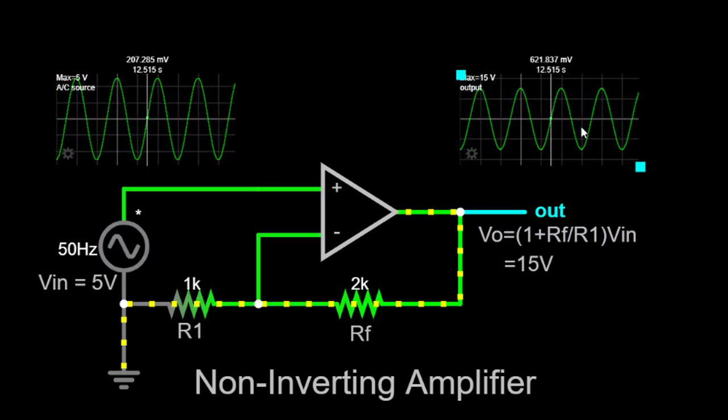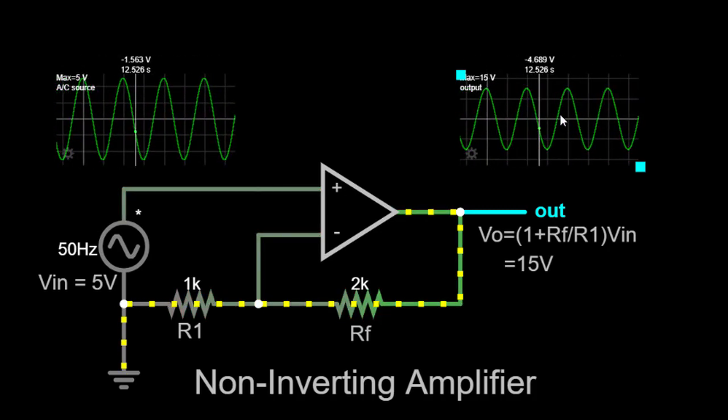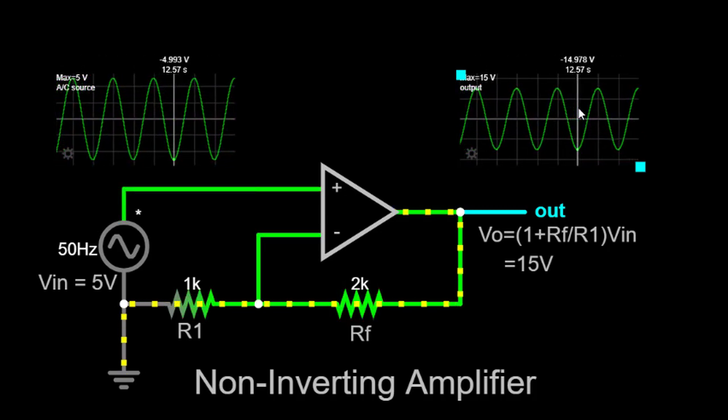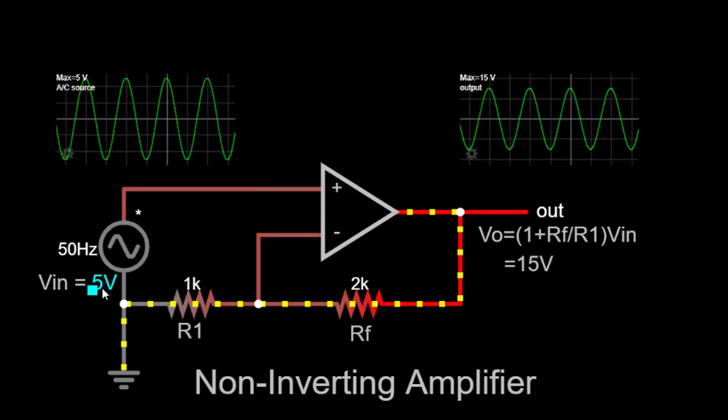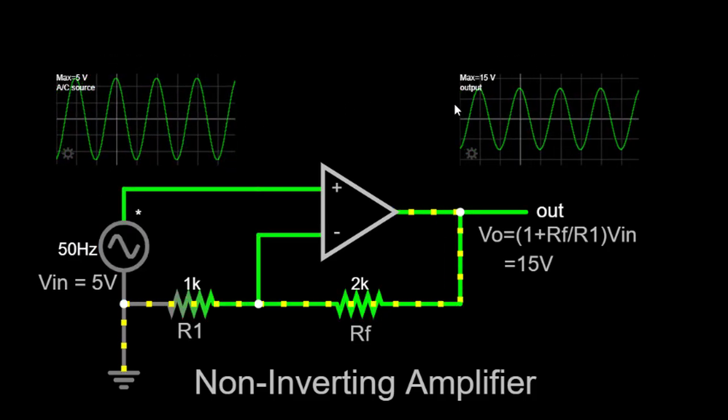Now, let's dive into the simulator and observe the behavior of a non-inverting amplifier in action. In the simulation, we will apply a 5V AC input signal with a frequency of 50Hz and observe the amplified output.